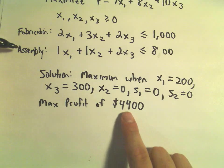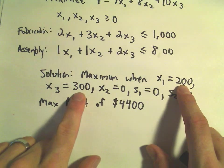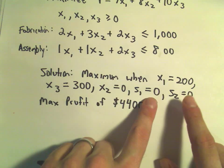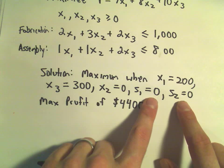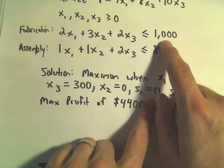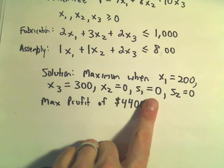One more time, you'll get a profit of $4,400 when you make 200 of type A, 300 of type C, and none of type B. Since there's zero slack left over from both slack variables, you'll use up all of the available fabrication hours and all of the available assembly hours.